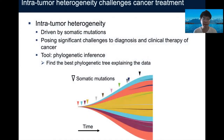Our whole story starts with the well-known phenomenon of intratumor heterogeneity. This phenomenon is mainly driven by somatic mutations, where you can see them in the picture marked with triangles. As time passes by, somatic mutations are accumulated and finally result in different populations of cells with distinct genotypes. Intratumor heterogeneity poses significant challenges to diagnosis and clinical therapy of cancer.